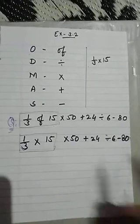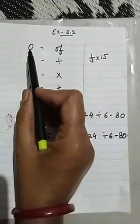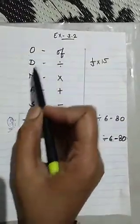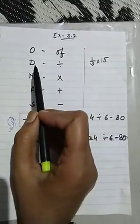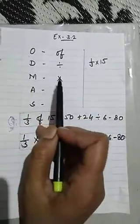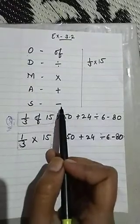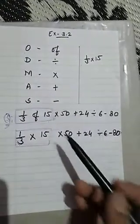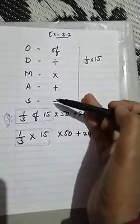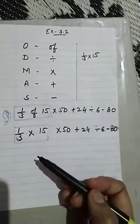Now here one operation is added, that is O. O means 'of' — the rest is the same. D means divide, M means multiply, A means add, and S means subtract. The use of these operations you will understand more clearly with the help of an example.